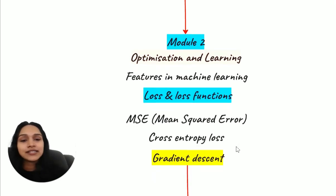The second module is for optimization and learning. We will be covering concepts like features in machine learning, understanding what is loss and loss functions, different types of loss functions like mean squared error and cross entropy loss function, and understanding the concept of gradient descent in machine learning.